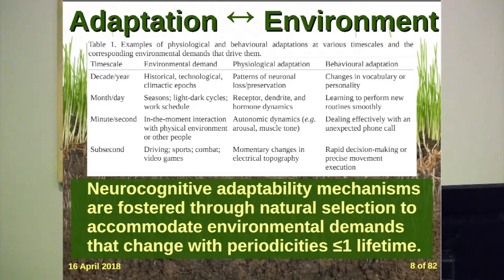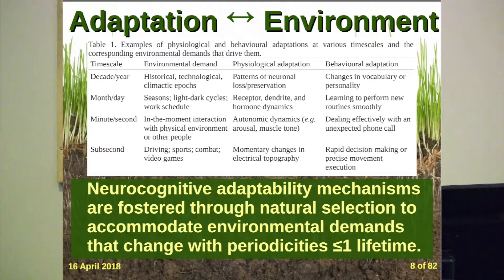Now after decades of studying the brain we know it adapts in various different ways. This is my model of adaptability. If you break it down by time scale it doesn't seem like multiple different mechanisms anymore. If you think about the brain adapting to things that change at the decade or year level, at the month or day level, the minute-second level, the sub-second level — we have different brain functions and mechanisms that change at these time intervals. My working definition: neurocognitive adaptability is made up of mechanisms fostered through natural selection to accommodate environmental demands that change with a periodicity of less than one lifetime.